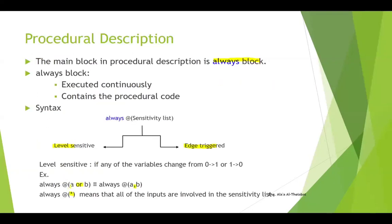So if we have a number of variables — for example A, B, C, D — we can write always @(A, B, C, D). We can also use the comma to separate the variables, or if we have more than one variable, we can use always @(*), the star notation, to include all inputs.